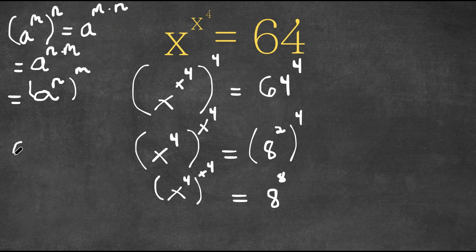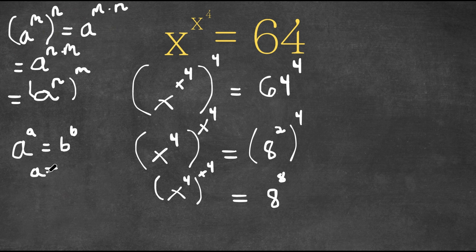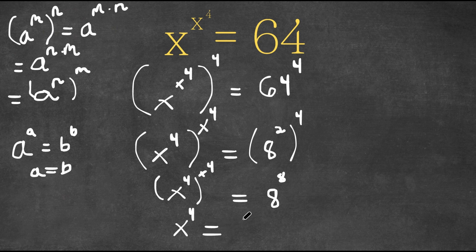If we have something in the form a to the power of a equals b to the power of b, then this means that a is equal to b. As you can see right here, we have x to the power of 4 to the power of x to the power of 4 equals 8 to the power of 8. This means that x to the power of 4 is equal to 8.